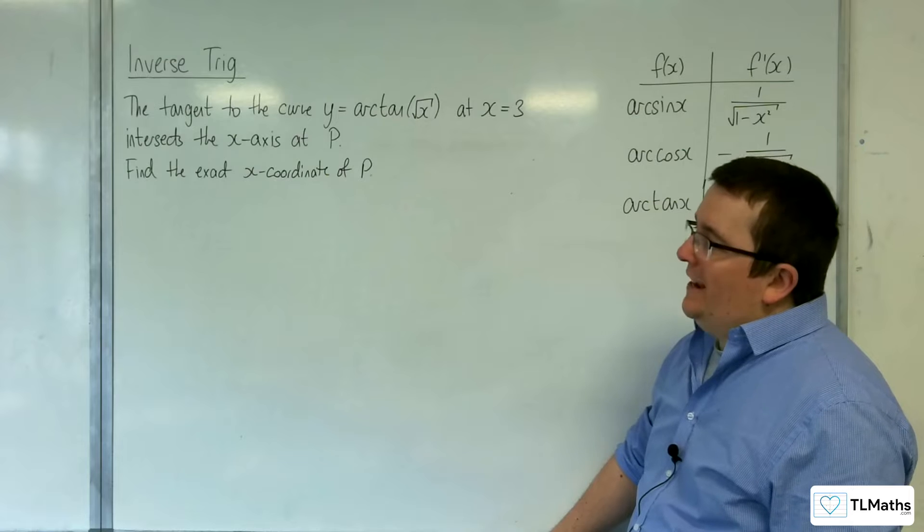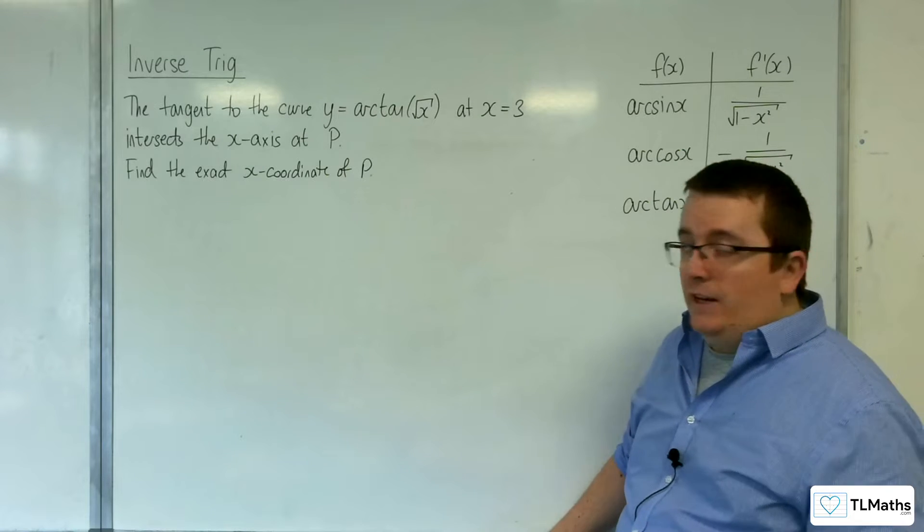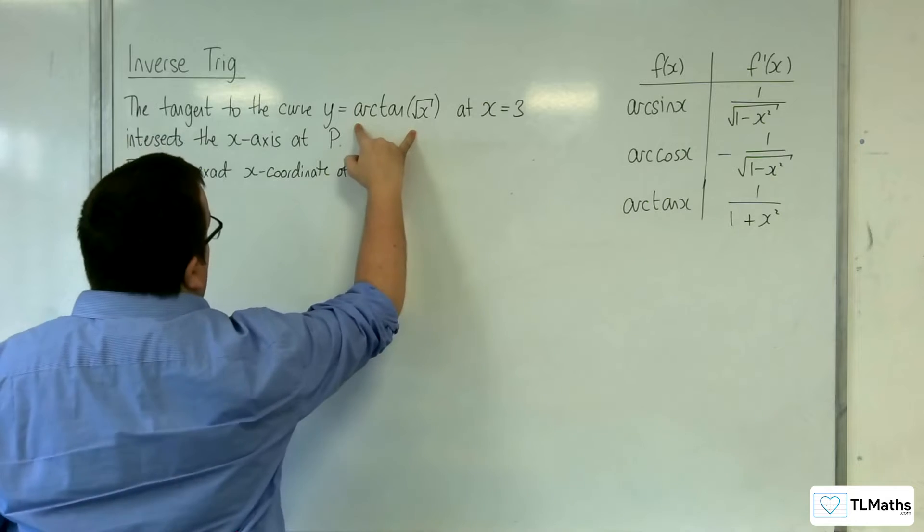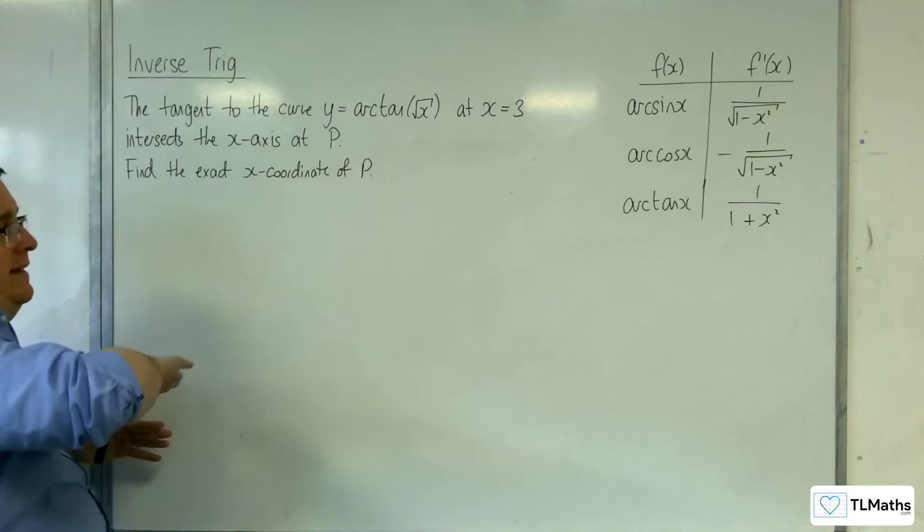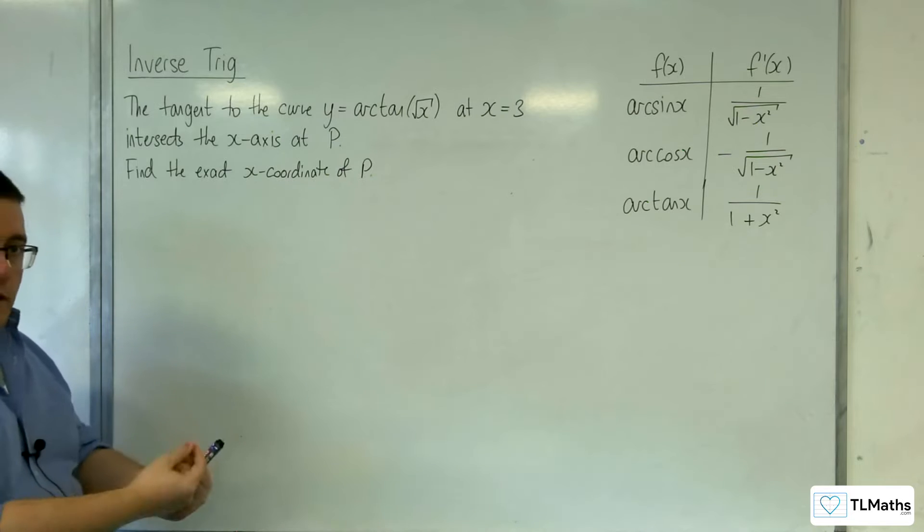Find the exact x-coordinate of p. So there's a tangent line to the curve y equals arctan of root x when x is equal to 3, and that's going to be intersecting the x-axis. We need to figure out where it does.